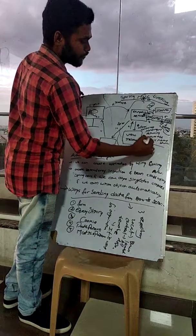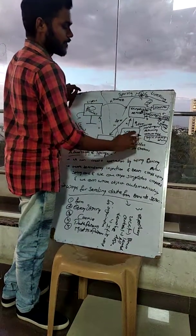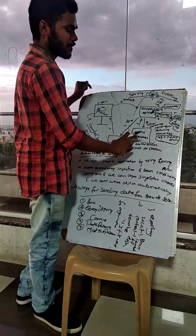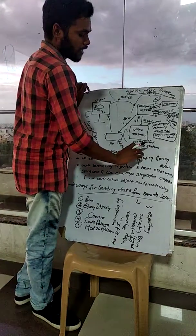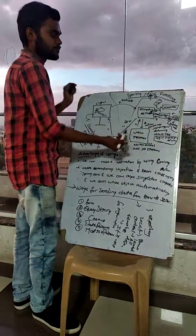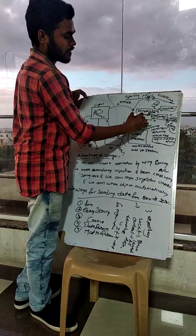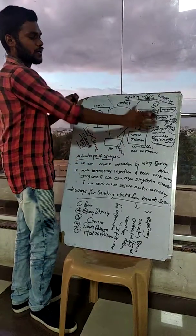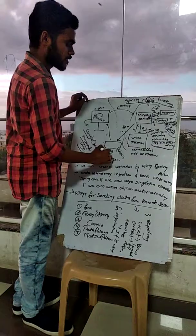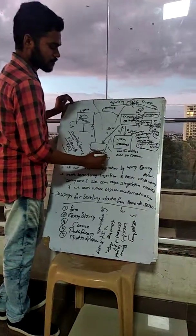It returns the logical name of the view. The view resolver adds the suffix and prefix like .jsp and returns to the Dispatcher Servlet. Then the Dispatcher Servlet sends the whole data to the JSP file to the view.